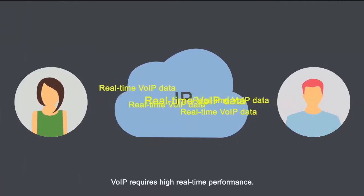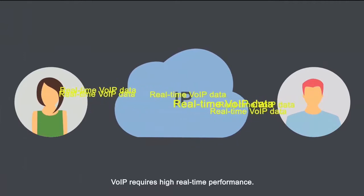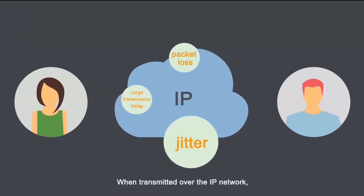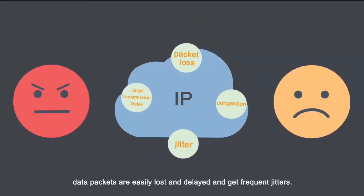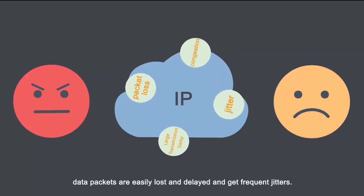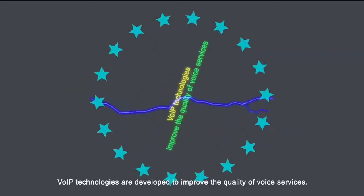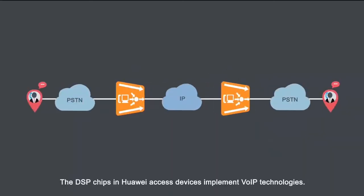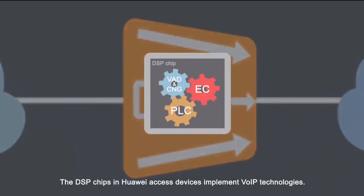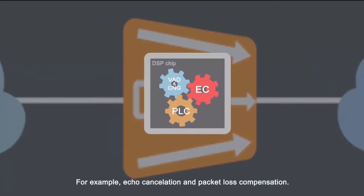VOIP requires high real-time performance. When transmitted over the IP network, data packets are easily lost and delayed and get frequent jitters. VOIP technologies are developed to improve the quality of voice services. The DSP chips in Huawei access devices implement VOIP technologies, for example, echo cancellation and packet loss compensation.